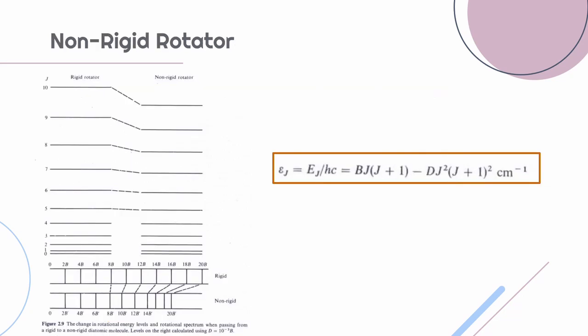Now we discuss non-rigid rotator, that is, a molecule in which the bond length is not constant. As the molecule rotates quickly, the atoms in the diatomic molecule tend to move apart due to the centrifugal force. What we observe in a non-rigid rotator is that the energy difference decreases as the J value increases.